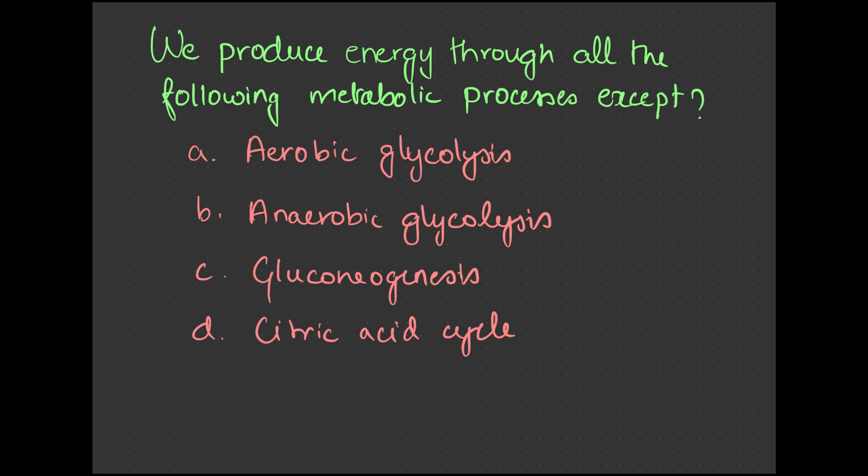Energy production, there is a lot of metabolic process involved we spoke about. Which is the odd one which doesn't fit in? Is it aerobic glycolysis? Is it anaerobic glycolysis? Is it gluconeogenesis or citric acid cycle? It is the gluconeogenesis where energy production is stopped and it is reversed to reform glucose.